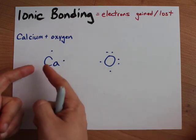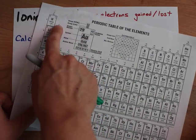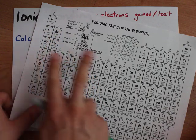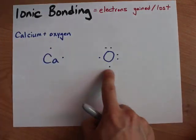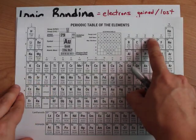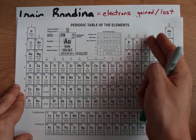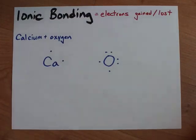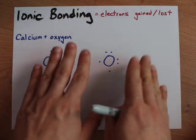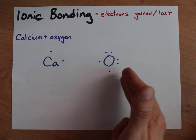Calcium brings two valence electrons with it. It's in the second column of the periodic table — that two tells you there are two valence electrons. Oxygen brings six valence electrons; it's in group 16, and it's the sixth atom in its row. That's how you know how many valence electrons each element brings. Oxygen follows the octet rule and wants eight valence electrons, but it only has six right now.